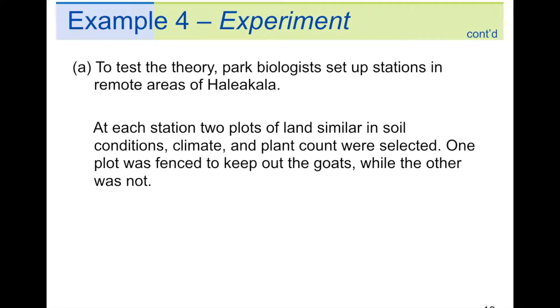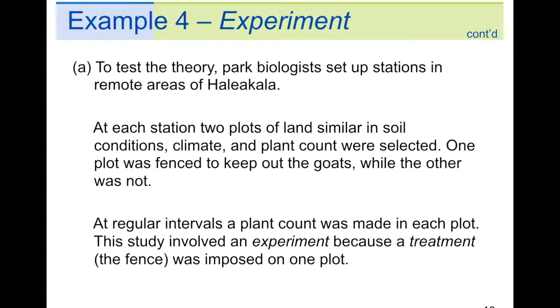To test the theory, park biologists set up stations in remote areas of Haleakala. At each station, two plots of land similar in soil conditions, climate, and plant count were selected. One plot was fenced to keep out the goats, while the other was not. At regular intervals, a plant count was made in each plot. This study involved an experiment, because a treatment, the fence, was imposed on one plot. So, adding the fence was your treatment. If all you did was just watch the plants and make observations that way, even though you were still collecting data, you didn't change anything, so it's still an observation. Putting in the fence made it an experiment, because you changed something about it.